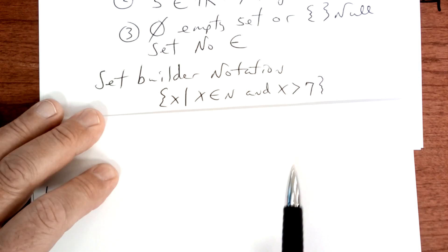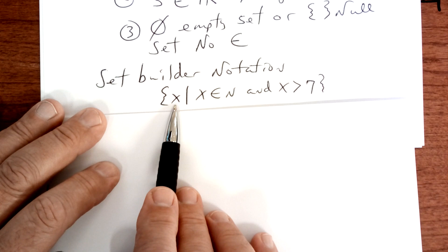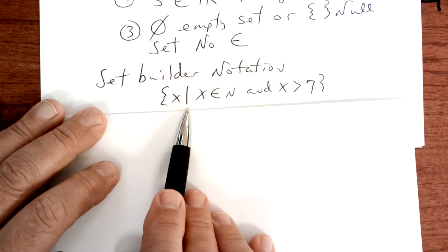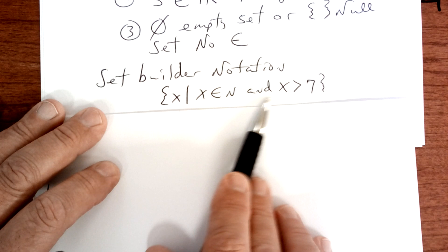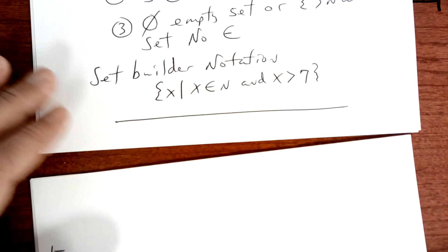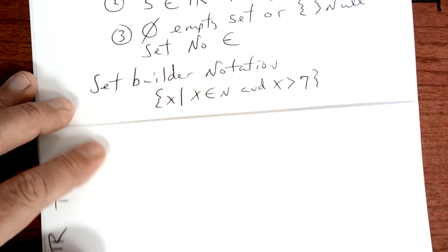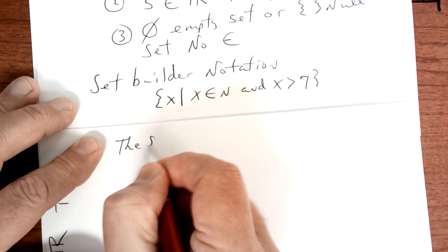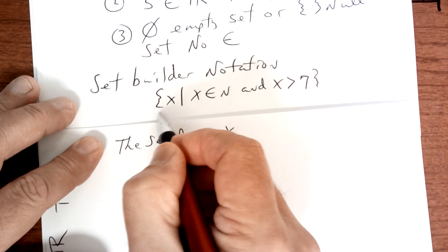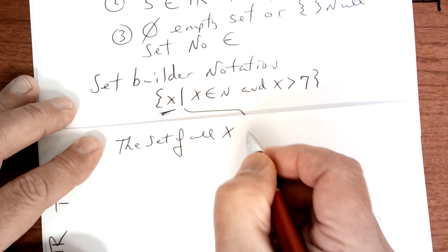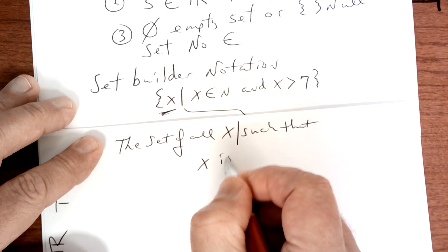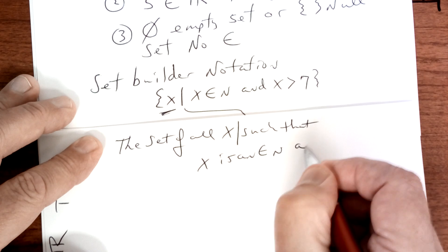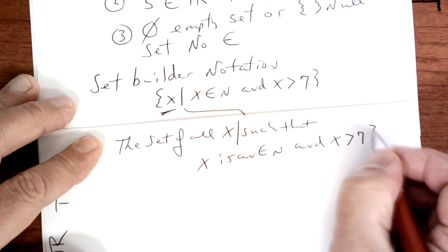There's something called set builder notation. And here it is. The way you read this is, the set of all x's, such that, that's what that little line means, such that x is an element of the natural numbers and x is greater than seven. Okay, so let's write that out. The set of all x's, such that x is an element of the natural numbers and x is greater than seven. Make sure you understand that. That's how you say that.